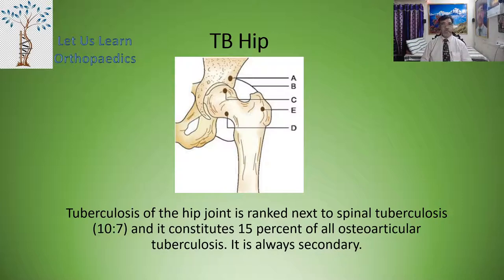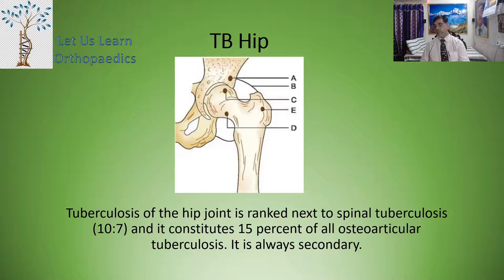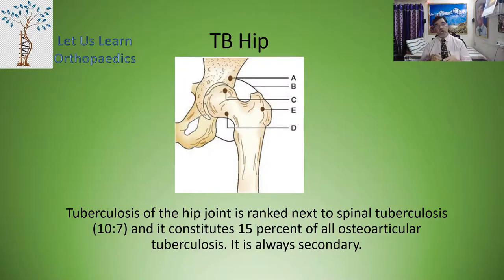The ratio being 10 to 7 — it means 10 cases of spinal tuberculosis, 7 cases will be there for TB hip. And it constitutes 15% of all osteoarticular tuberculosis.